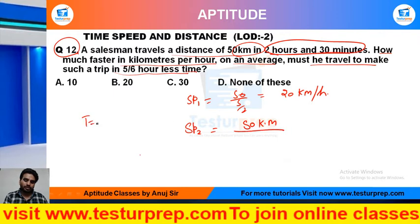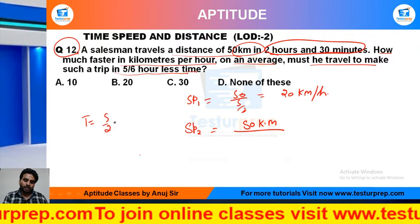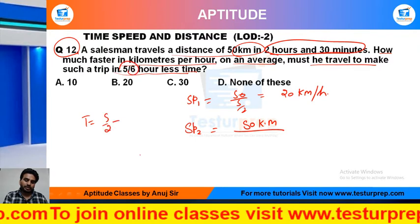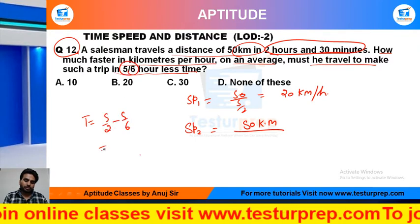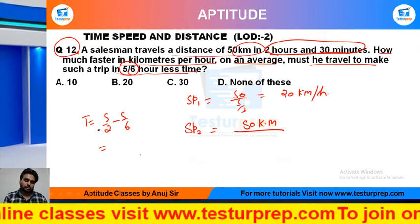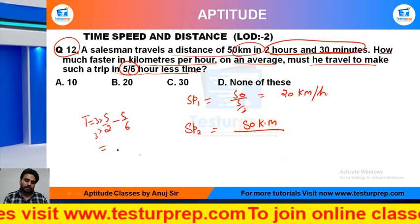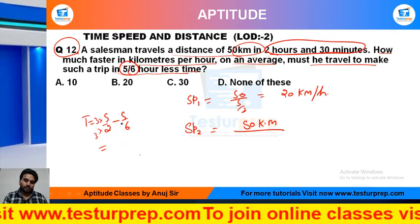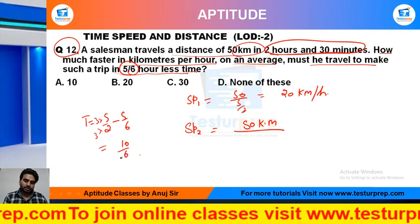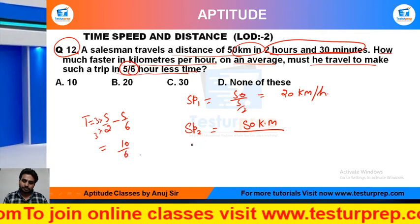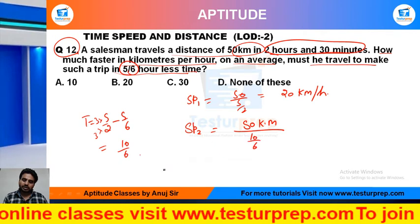The time now will be 5 by 2 minus 5 by 6. How much less should it be? It should be 5 by 6 less. Multiplying by 3 over 3 gives us 10 divided by 6 hours.